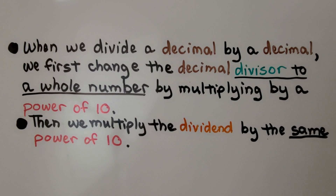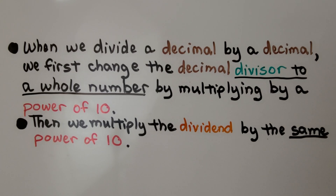When we divide a decimal by a decimal, we first change the decimal divisor to a whole number by multiplying by a power of 10. Then we multiply the dividend by the same power of 10.